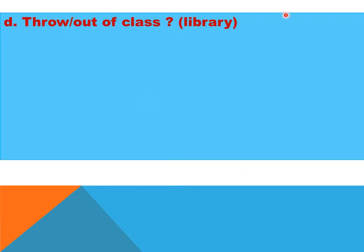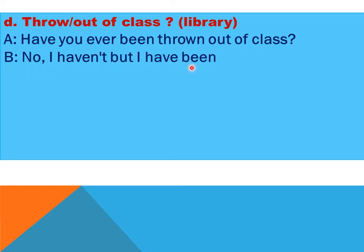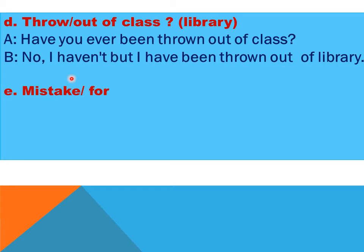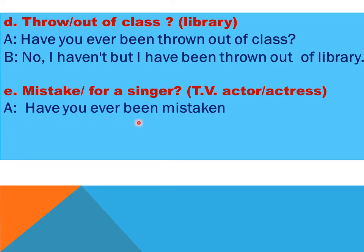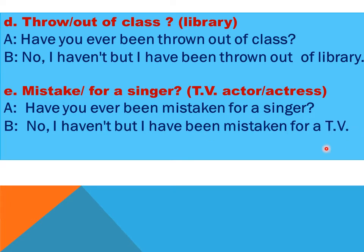For 'thrown out of class/library': A says 'Have you ever been thrown out of class?' B says 'No, I haven't, but I have been thrown out of the library.' For 'mistaken for a singer/TV actor': A says 'Have you ever been mistaken for a singer?' B says 'No, I haven't, but I have been mistaken for a TV actor or actress.'